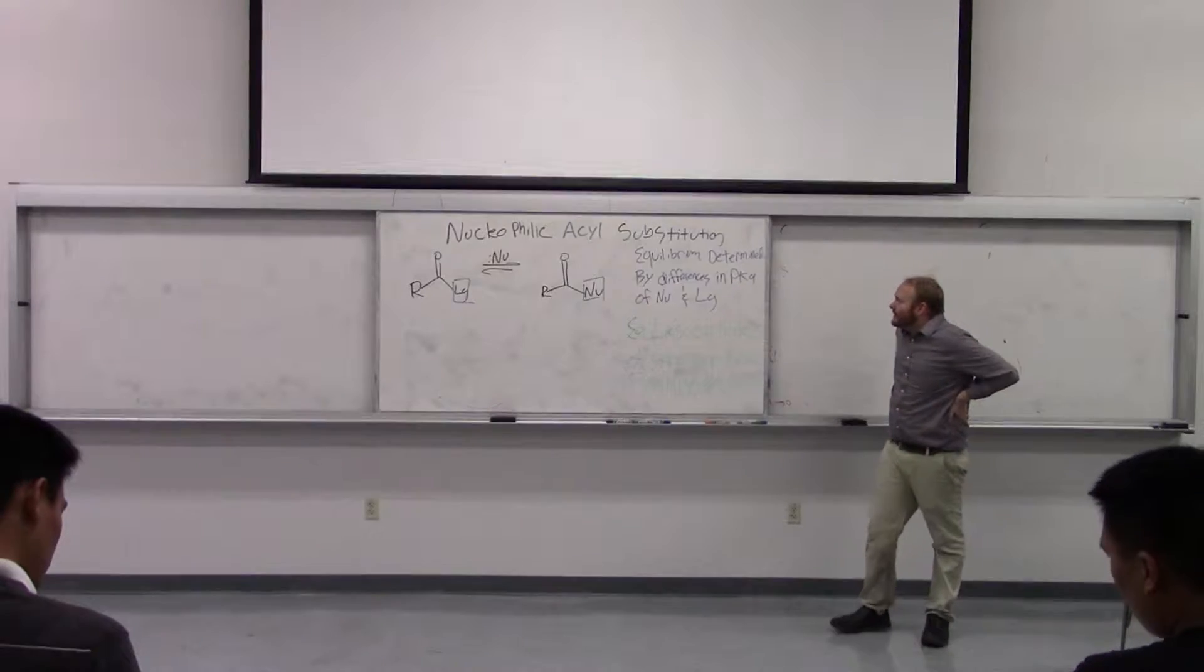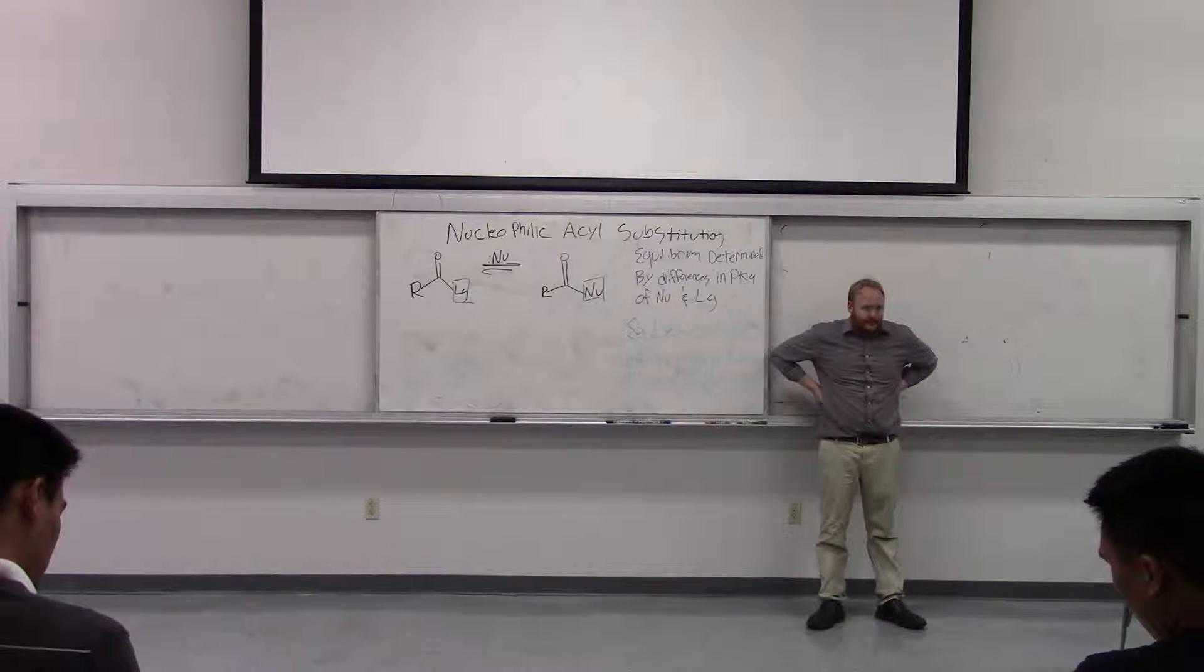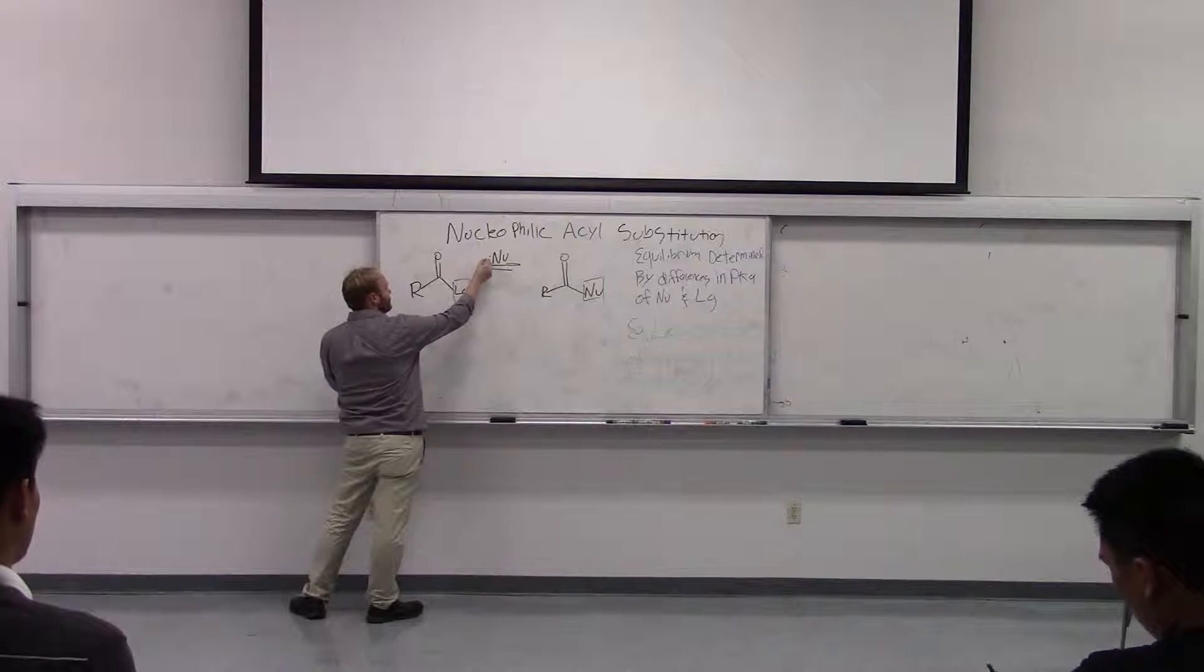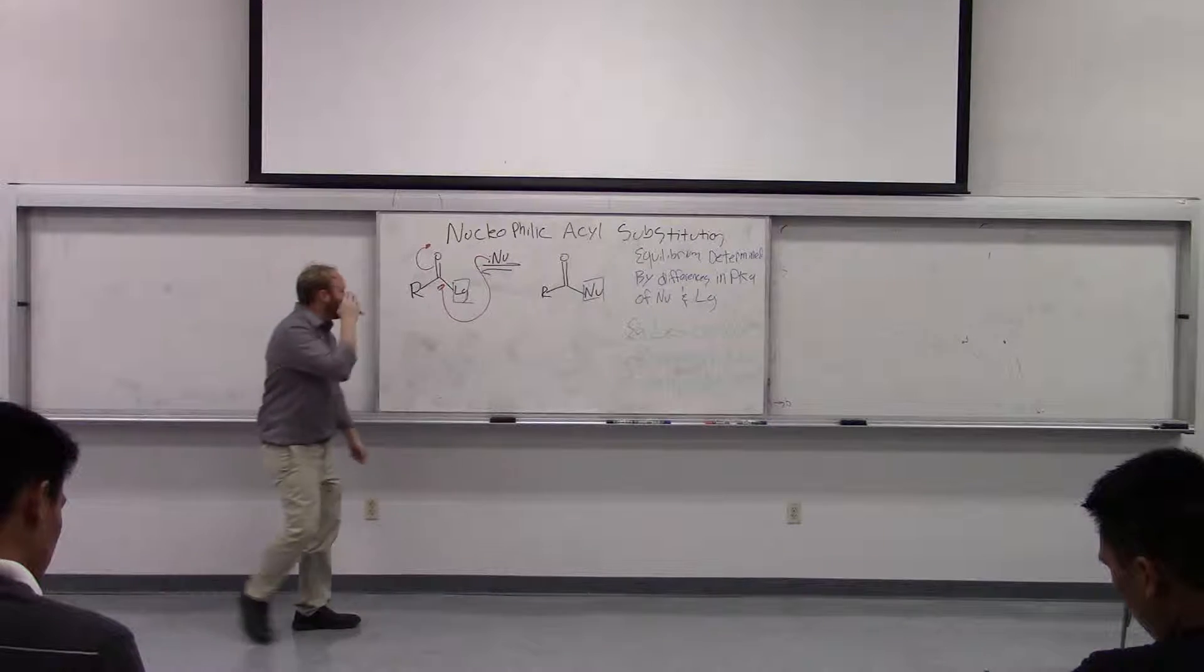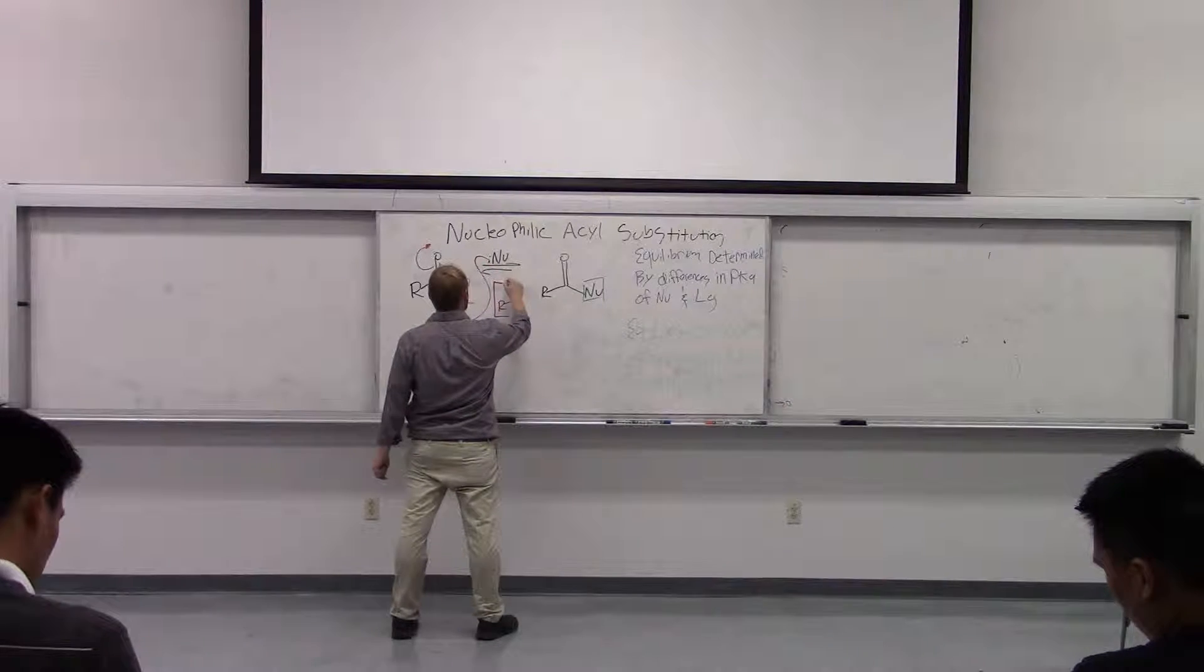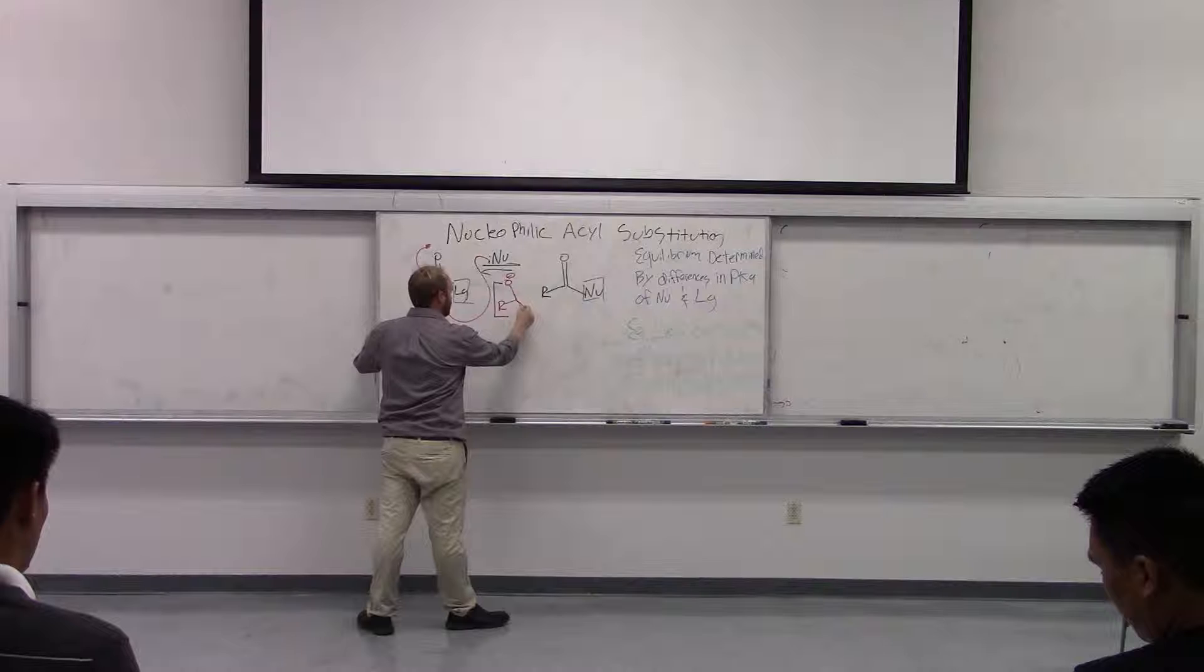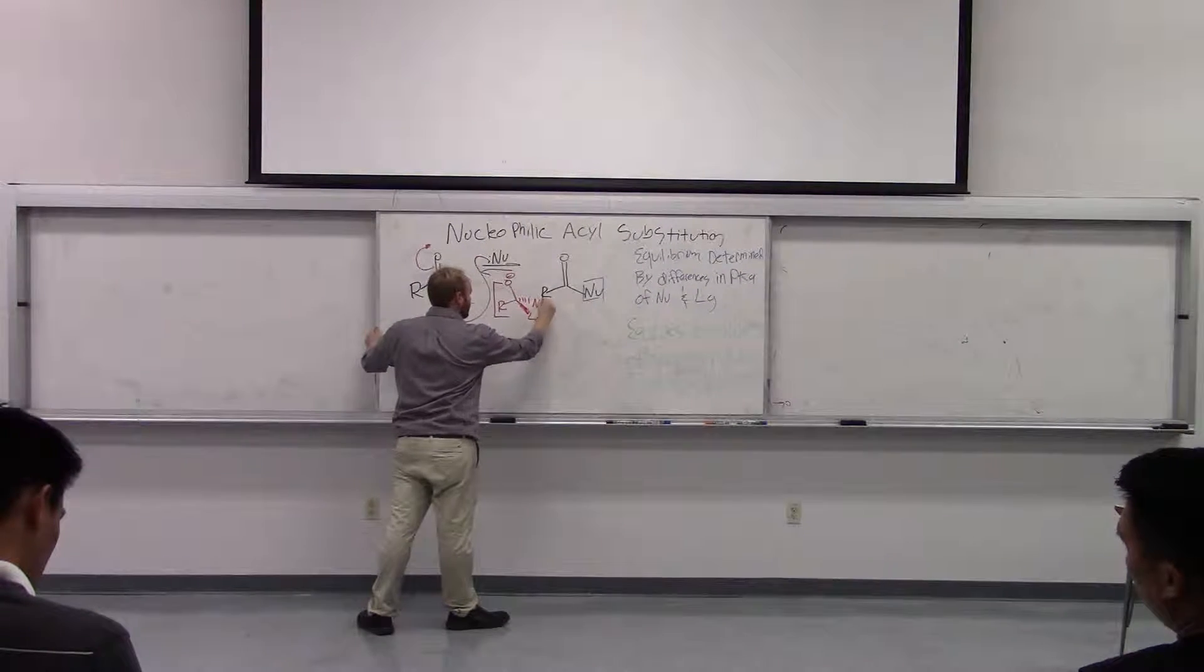So in general, on Friday we talked about nucleophilic acyl substitution. In nucleophilic acyl substitution, we have a nucleophile that's going to add to a carbonyl. That's going to give us a tetrahedral intermediate like so.